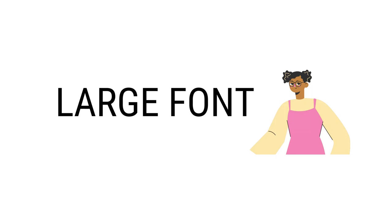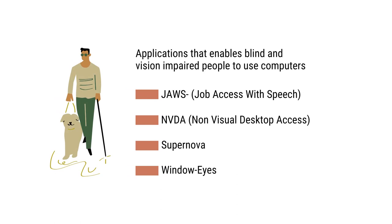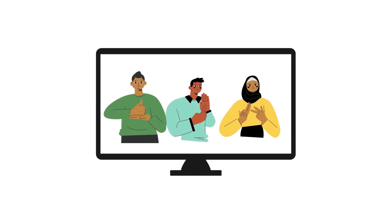The last factor is lack of appropriate technology. People with disabilities can be helped in multiple ways by integrating appropriate technology with instructional strategies. For example, people with mild visual impairment can be given presentations in large font, and people with major visual impairment can be helped with software like JAWS, NVDA, Supernova, or Windows Eyes. Likewise, people with hearing impairment can be given presentations and videos in sign language so that they will be able to make use of them.